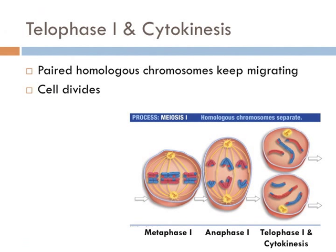Meiosis I ends with telophase I, when the homologous pairs finish moving to opposite sides of the cell. After this, the rest of the cell separates into two haploid daughter cells. The end result of meiosis I is that one chromosome of each homologous pair is distributed to a different daughter cell — a reduction division has occurred. Each cell has exactly half the number of chromosomes as a diploid, and therefore each cell is haploid.